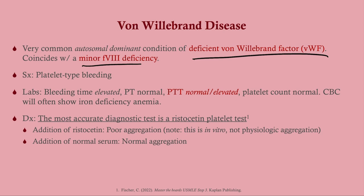In Von Willebrand's disease, the bleeding time is elevated — reflecting platelet-type bleeding. PT is normal. PTT is normal or elevated owing to the minor factor VIII deficiency; it won't cause hemophilia, it just shows up on labs. Platelet count is normal — there's nothing wrong with the number of platelets, they are defective. The CBC may show iron deficiency anemia, particularly in a young woman with heavy menorrhagia who is bleeding monthly.